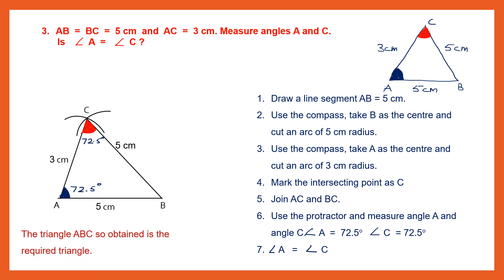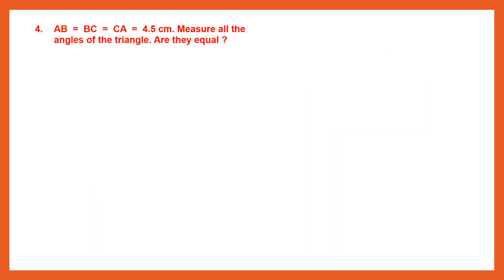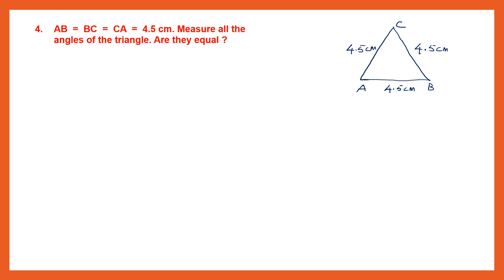So angle A is 72.5 degrees and angle C is 72.5 degrees. According to the question, is angle A equal to angle C? Yes, angle A is equal to angle C. We have answered all the questions — construct the triangle, then measure angles A and C, and find if they are equal. The triangle ABC so obtained is the required triangle. Question 4: AB equals BC equals CA equals 4.5 centimeters. The next part of the question asks us to measure all the angles. They have given us the sides but we are asked to measure all the angles and find if all are equal.